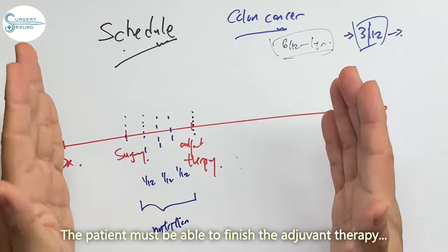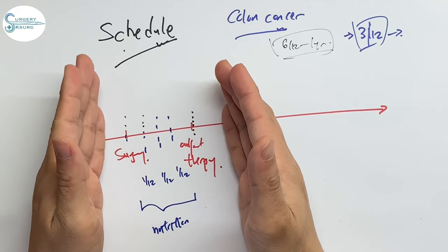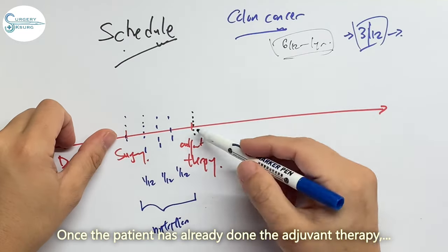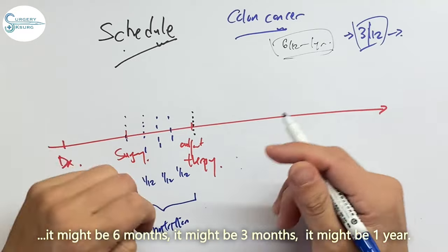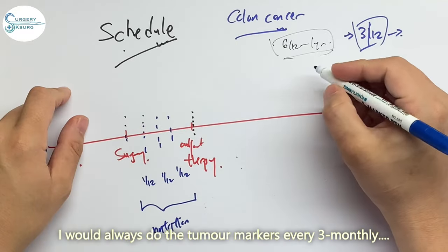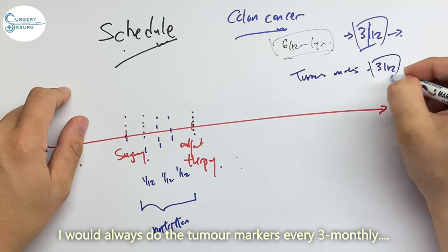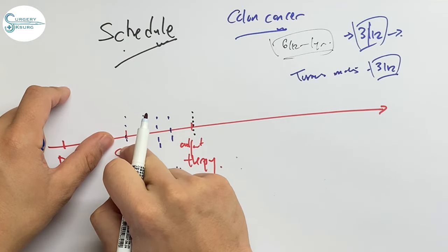The patient must be able to finish the adjuvant therapy with good nutrition. Once the patient has already done the adjuvant therapy, it might be six months, it might be three months, it might be one year, I will always do the tumor markers every three months. And this started from the definitive surgery.